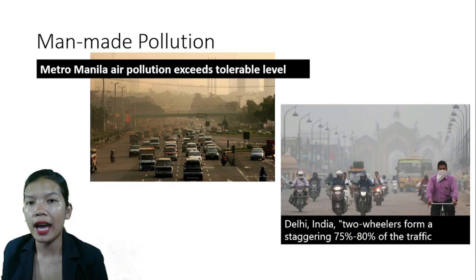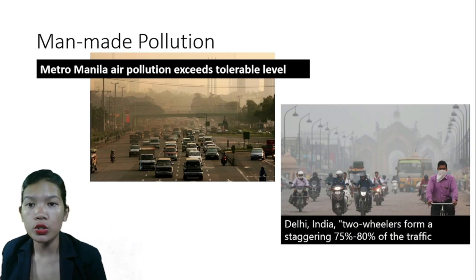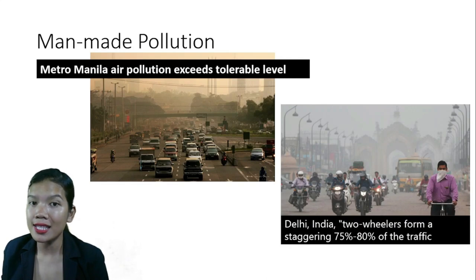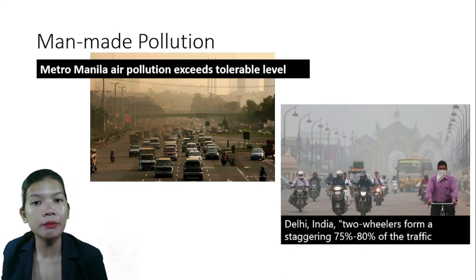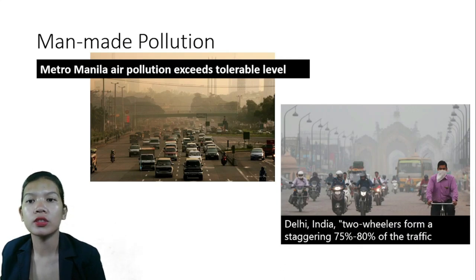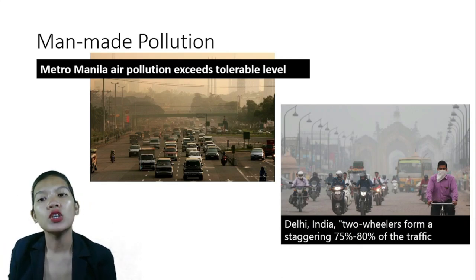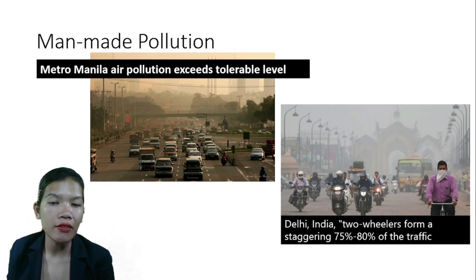One of the major ironies of urban pollution is that the necessities the poor have access to are also sources of the problem. The main workforce transport is the bus; however, because it runs mainly on diesel fuel, it is now considered one of the largest contributors to environmental pollution worldwide. The other mode of transportation the poor can afford is the motorbike — two- and three-wheeled vehicles — which, according to the Centre for Science and Environment in Delhi, India, form 75 to 80 percent of traffic in most Asian countries.